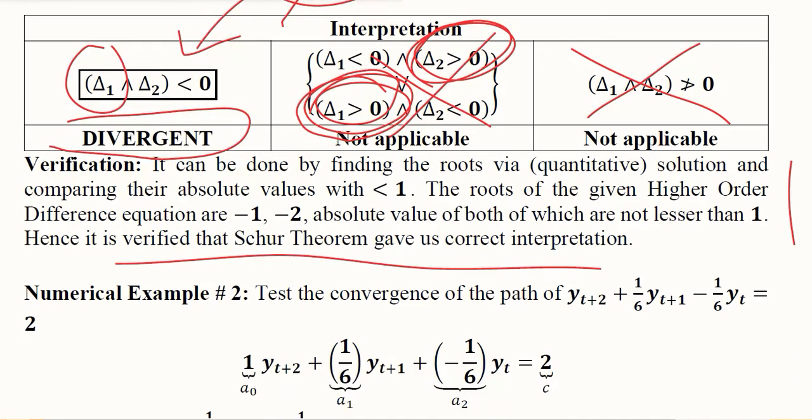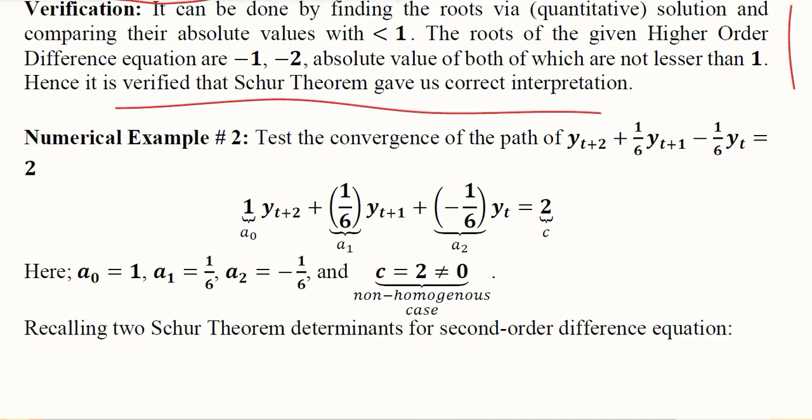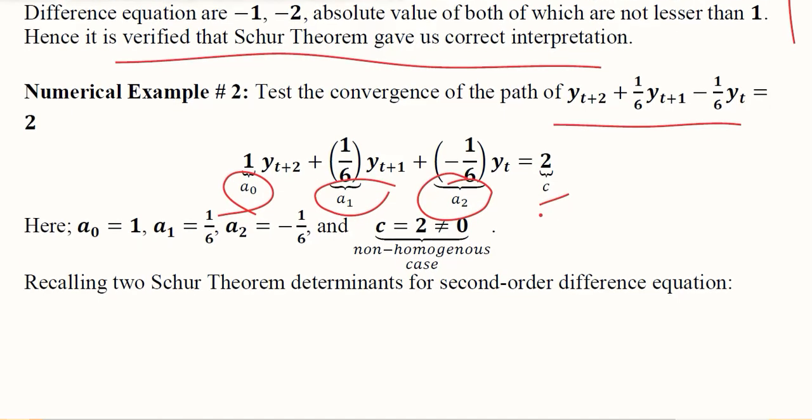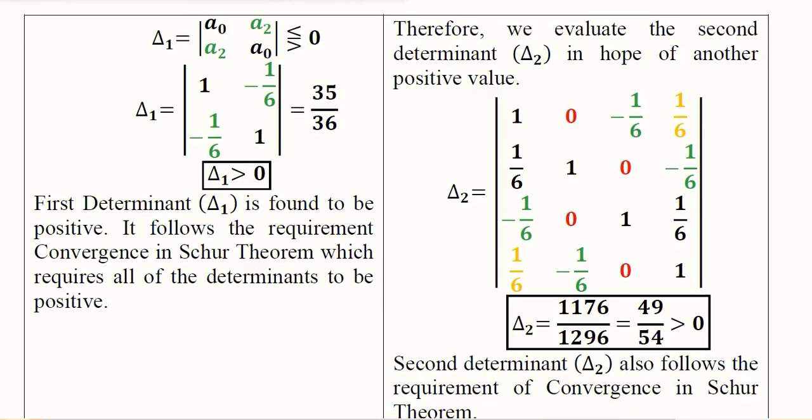Now we can talk about the second numerical example. This is again a second order difference equation. We have extracted the values of a₀, a₁, a₂ and c, and we put them into Δ₁ and Δ₂. The first answer is positive: 35 over 36, meaning the first determinant is positive. The second determinant is also positive: 49 over 54.